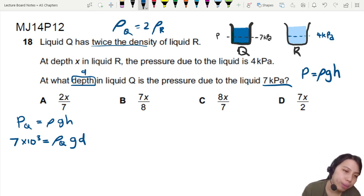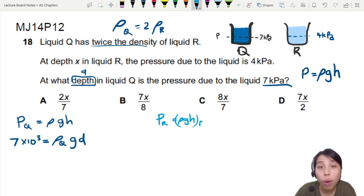We don't have enough information. Okay. We go and try the rho GH for the other equation.